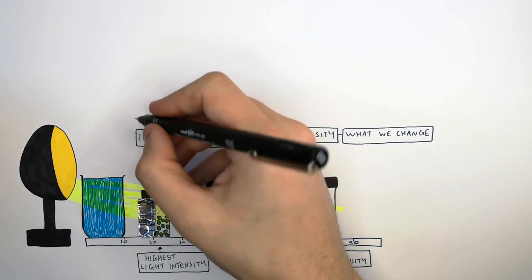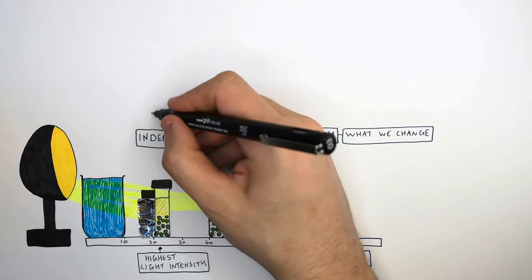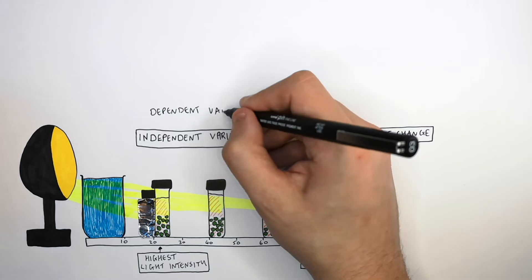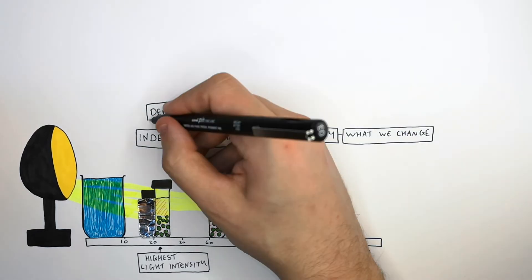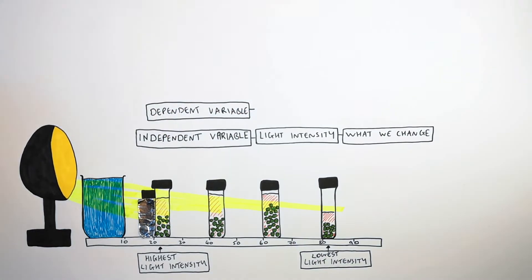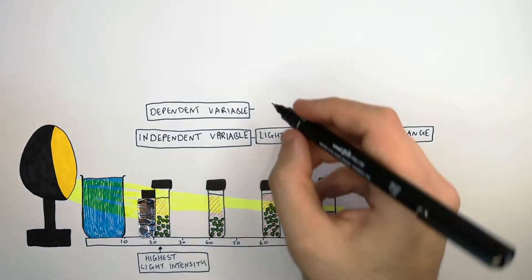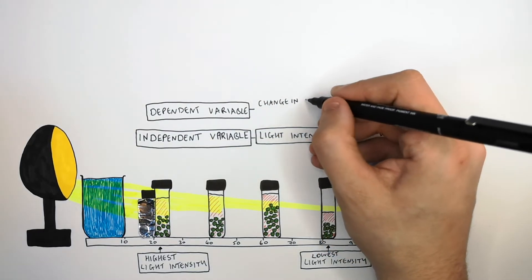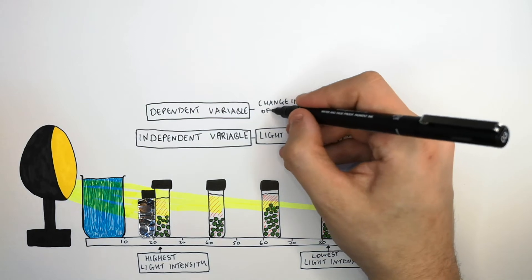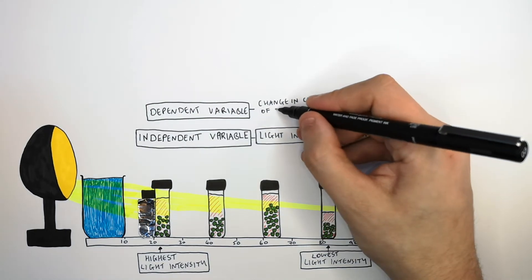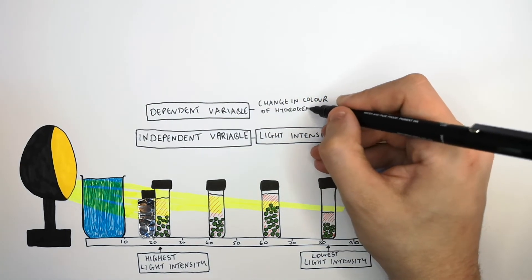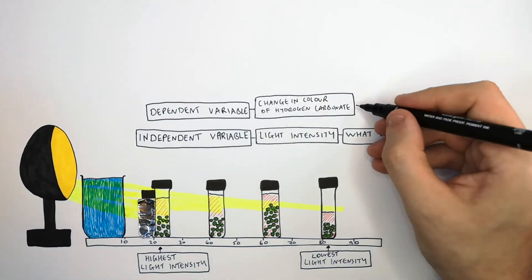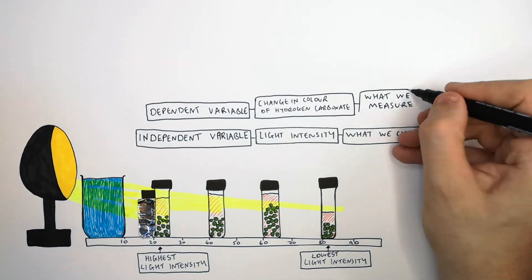We've talked about our independent variable — what we change — but what is it that we measure? This is our dependent variable. Your dependent variable is what you measure. What we're going to measure is the change in color of the hydrogen carbonate indicator. Remember, the dependent variable is what you measure.